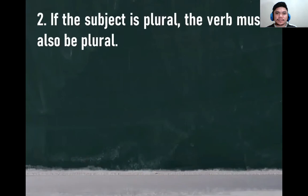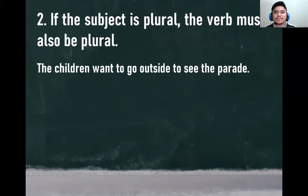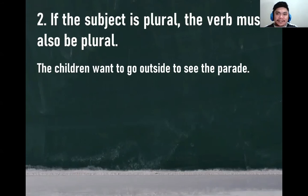Let's have number two. If the subject is plural, the verb must be plural as well. Example: 'The children want to go outside to see the parade.' The subject here is 'children.' Children is plural, therefore it requires the base form of the verb — the root verb, without adding any letter to it. 'Want' is the verb, so this example follows the second rule.